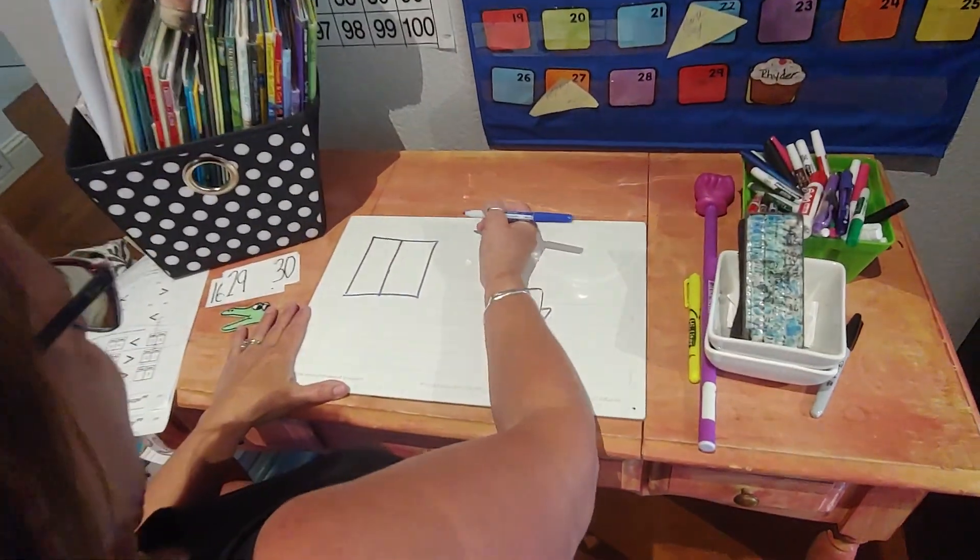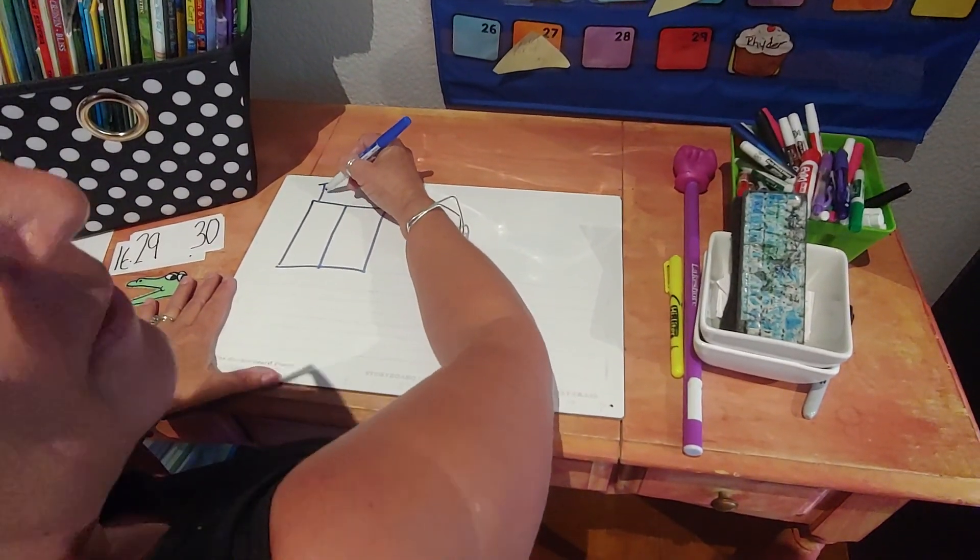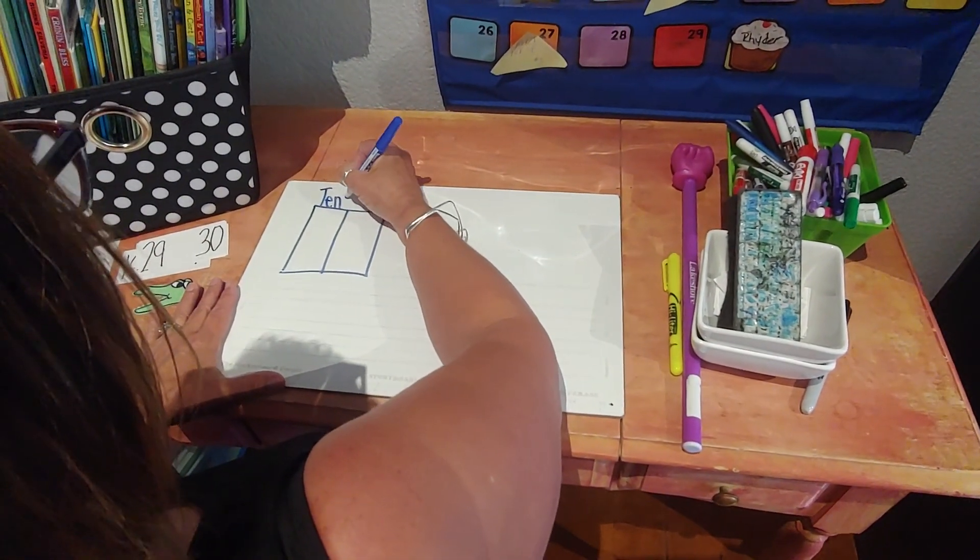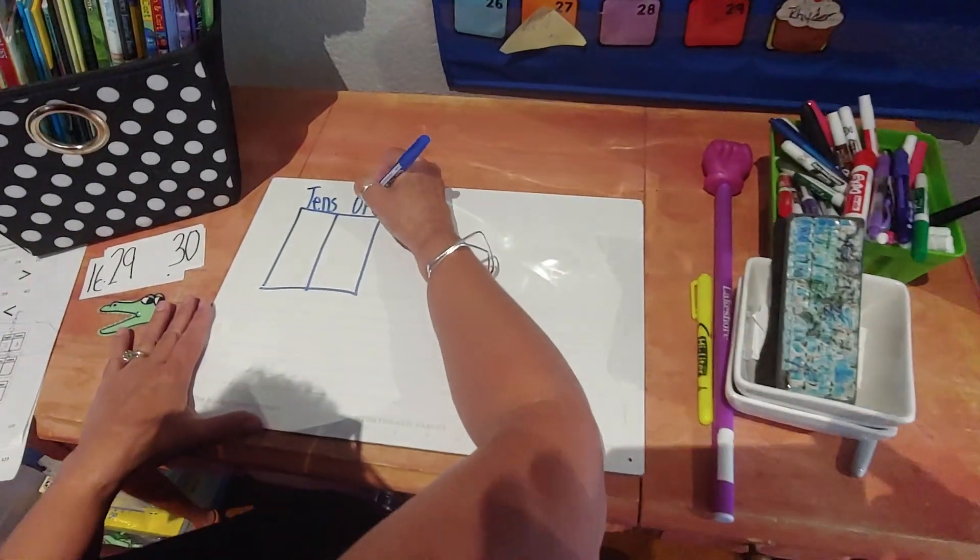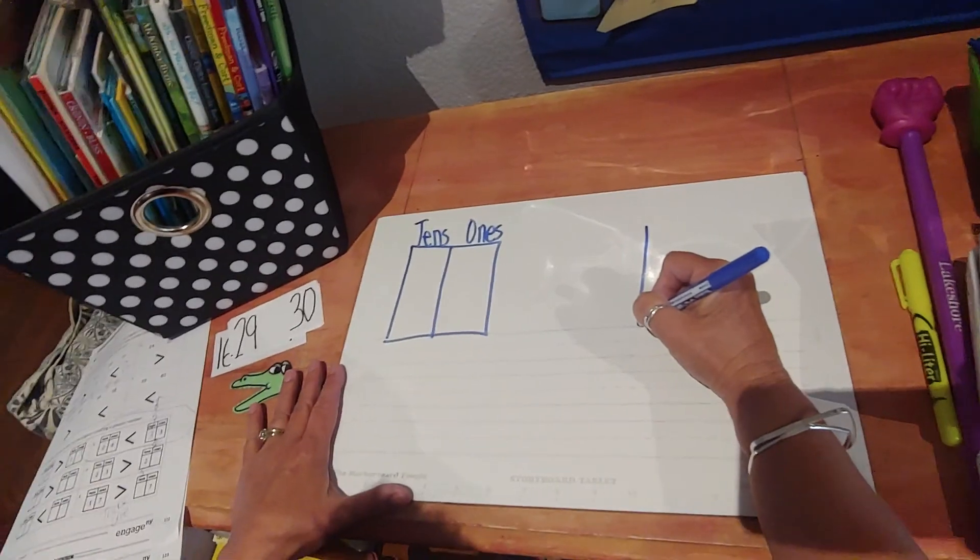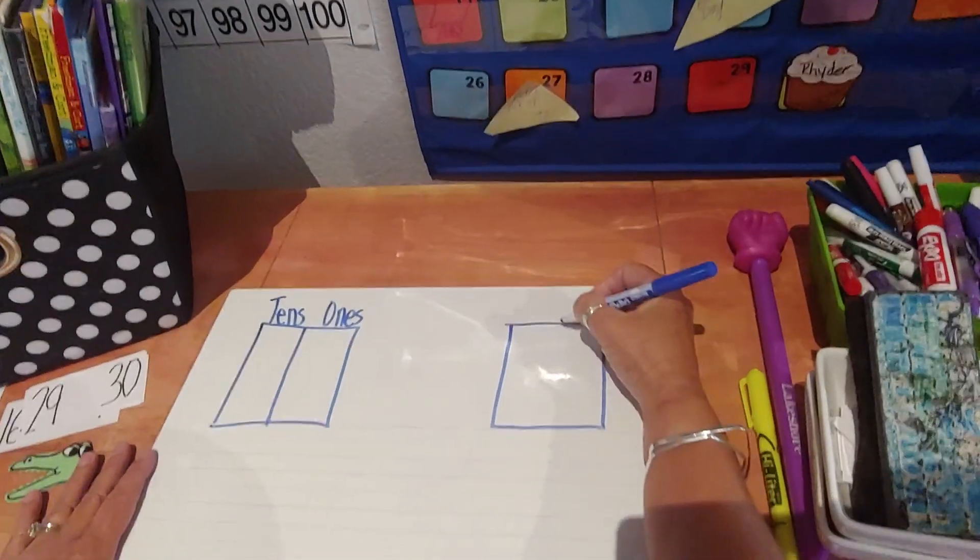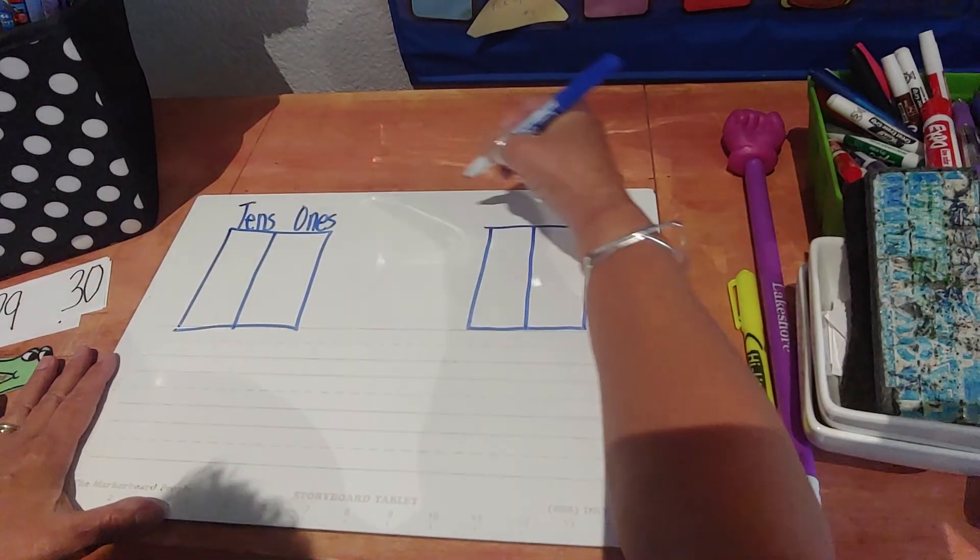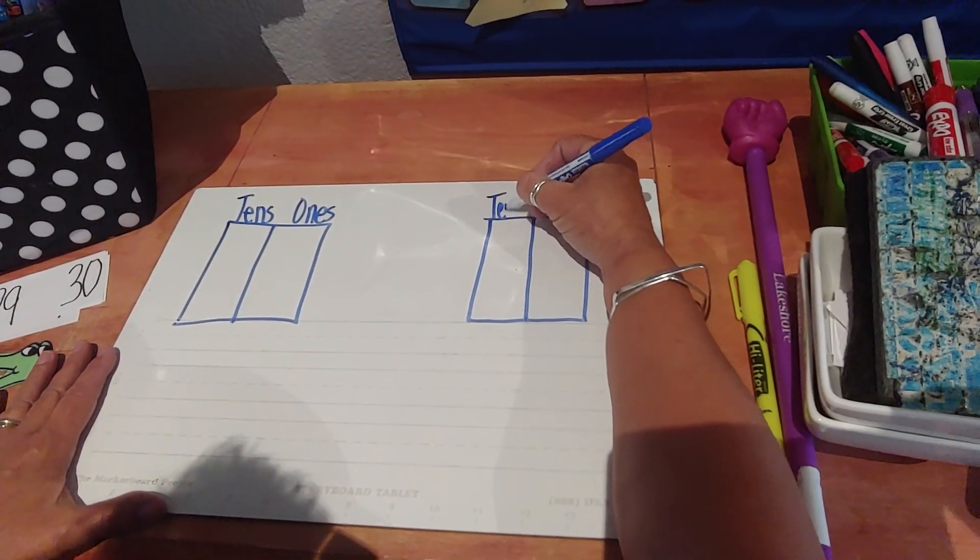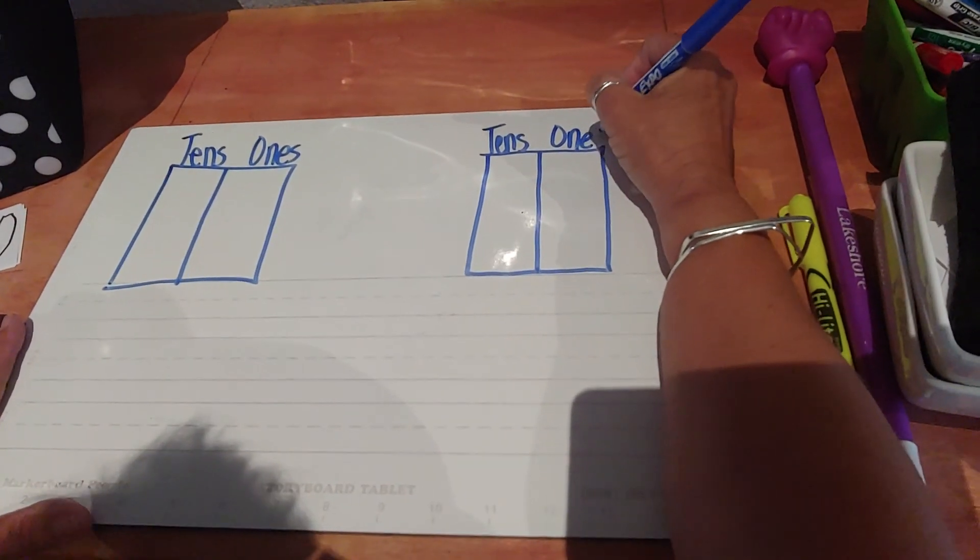you're going to find the place value house. Looks like that. And what goes on this side? Right. Who said that? I heard you. Tens and ones. And they give you another place value house that looks just like that one over on this side of your paper. And just like all place value houses,